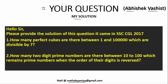The question number one is, how many perfect cubes are there between 1 to 1 lakh which are divisible by 7? How many two-digit prime numbers are there between 10 to 100 which remains prime numbers when order of digits is reversed?